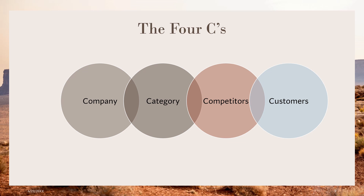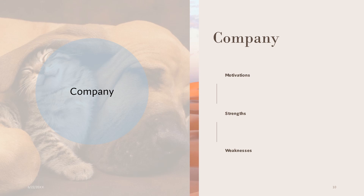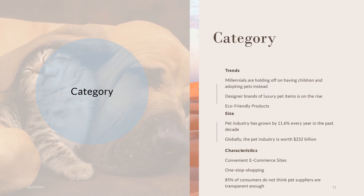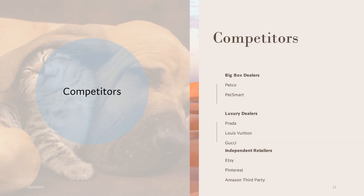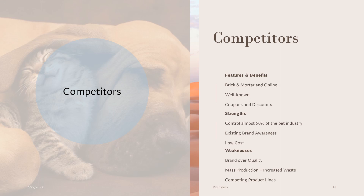Next, I'm going to get into the Four C's of company, category, and competitors — each has its own individual slide. For company, I'm going to talk about the motivations, strengths, and weaknesses. For category, I'm going to talk about the trends, the size, and the characteristics. As you can see, I have some examples. Then I get into competitors and highlight how there are three different types of competitors.